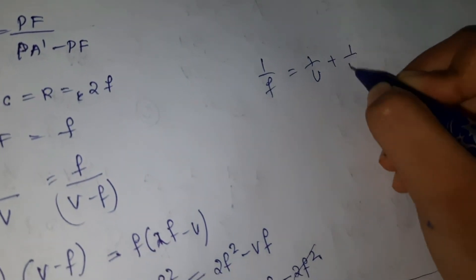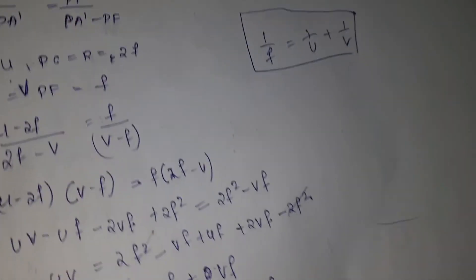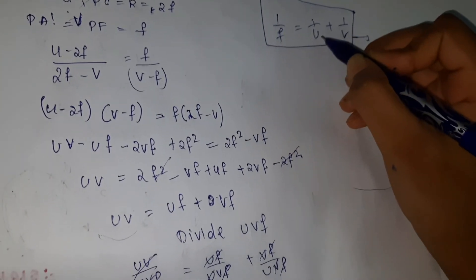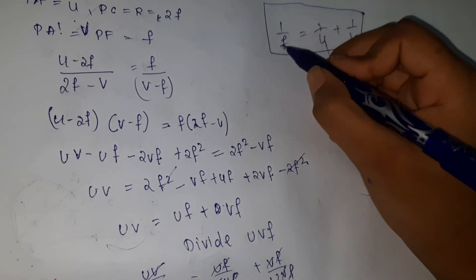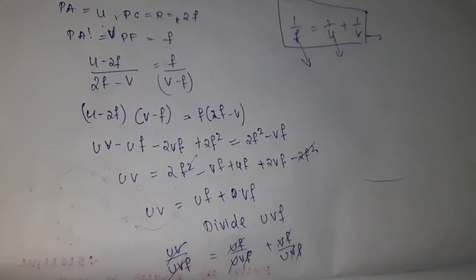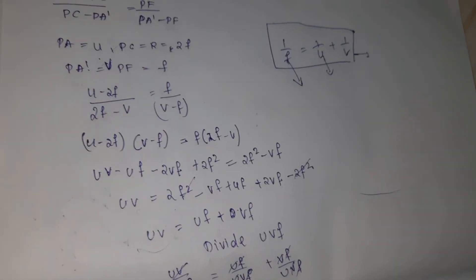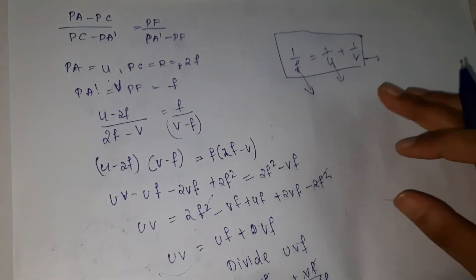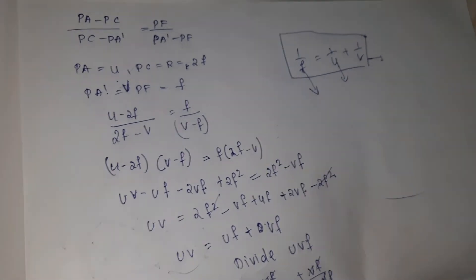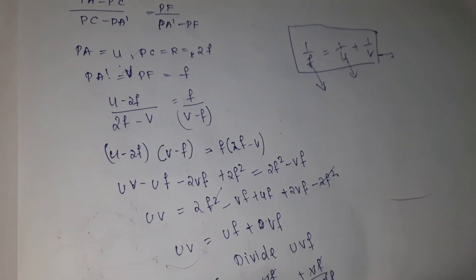So the final mirror equation is 1/f = 1/u + 1/v, where v is image distance, u is object distance, and f is focal length. In the upcoming video I'll talk about sign conventions — how to assign signs to the distances. We'll also solve problems on this. I hope you liked my video — please like, share, and subscribe. Thank you!